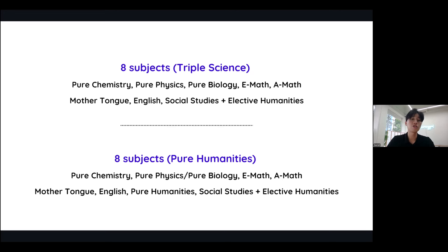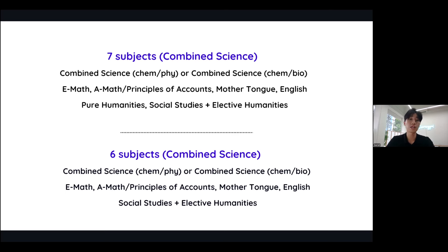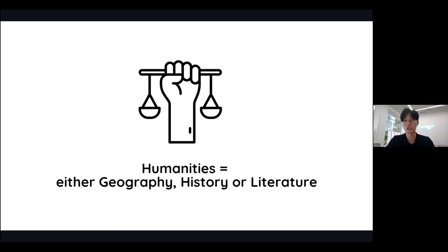Other than that, you also have what we call your seven-subject combined science subject combination. Combined science is either a choice between chem-physics or chem-bio. You will take your E-math or A-math — for some schools, they will replace A-math with POA, which is principles of accounts. You will also take mother tongue, English, your pure humanities, and social studies plus elective humanities. A six-subject combination will be just combined science with your two math, mother tongue, English, and your elective humanities with social studies. Most schools will offer geography, history, and literature, though the literature text depends on what your school is covering.